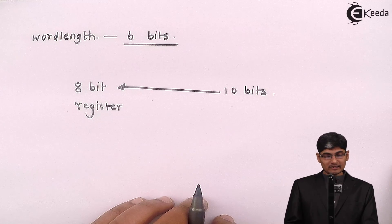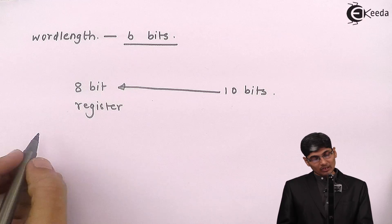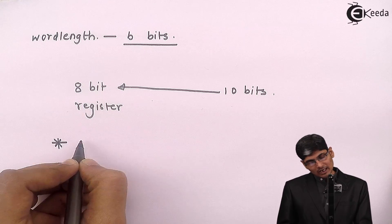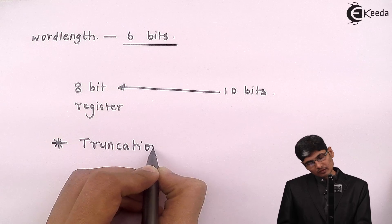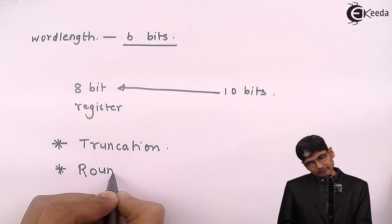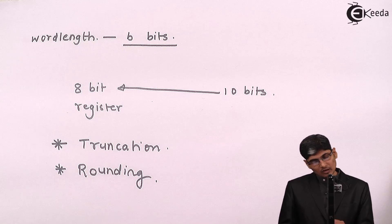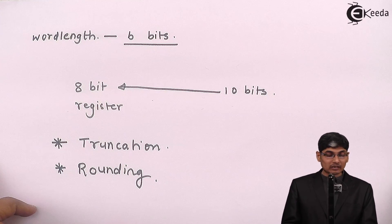Now this problem is been solved using two methods. The first method is called as truncation, and second method is called as rounding. So we will either be using truncation or we will be using rounding.